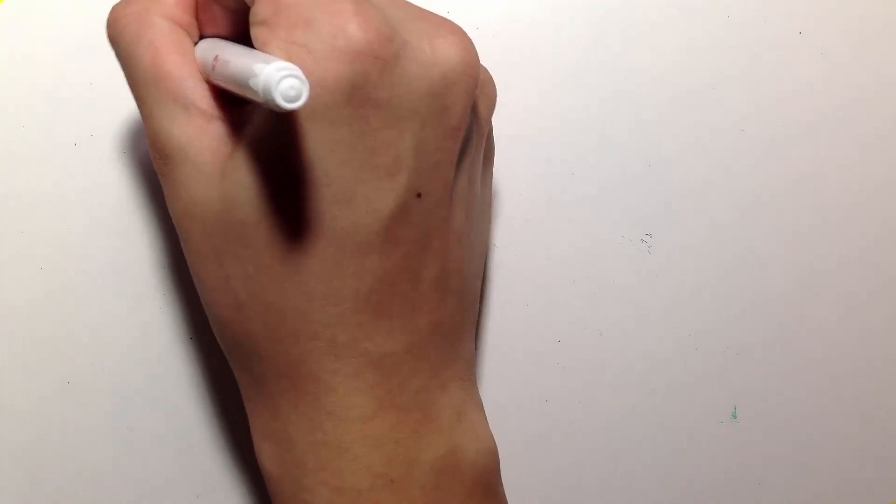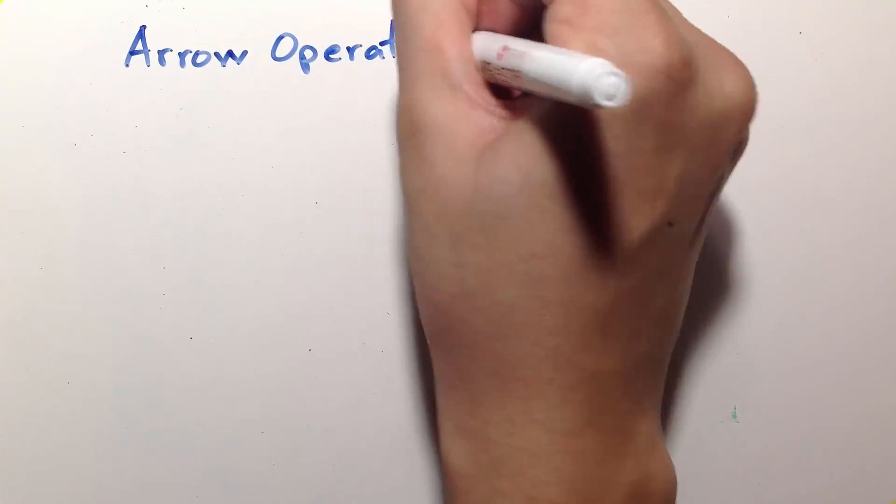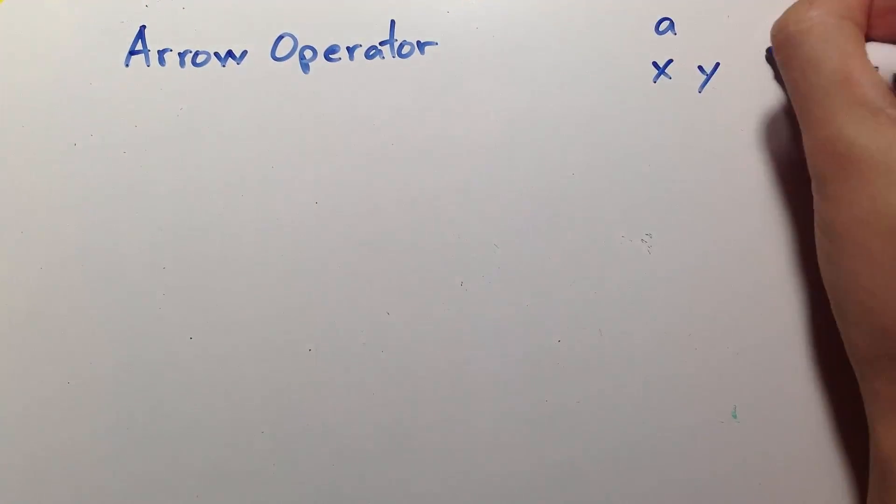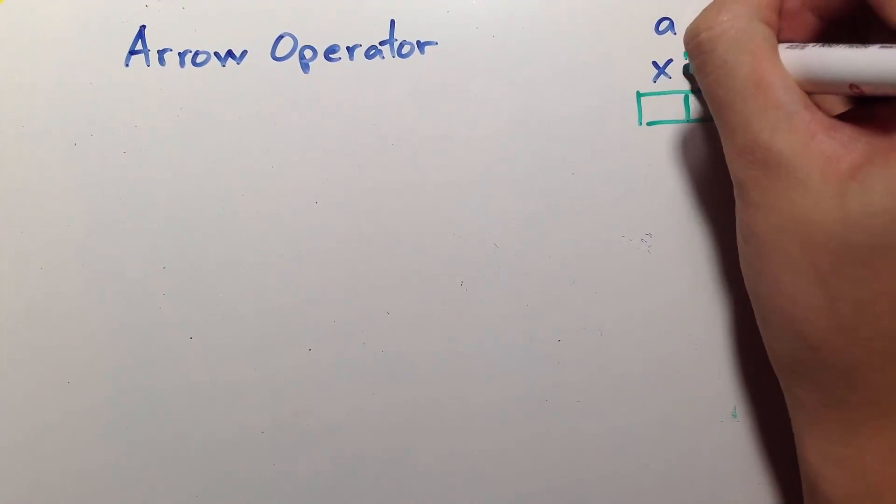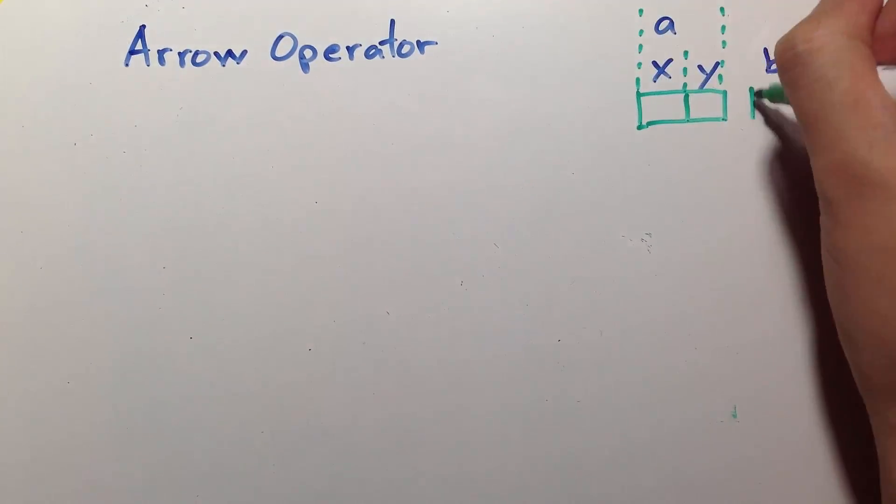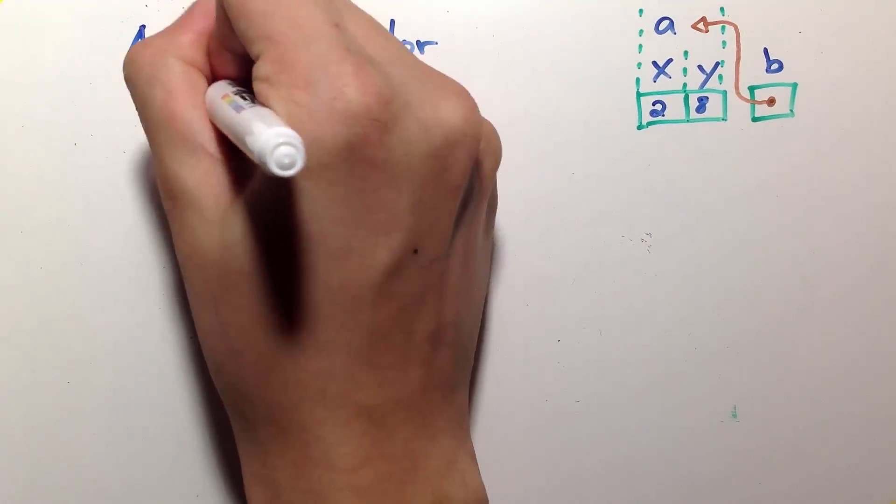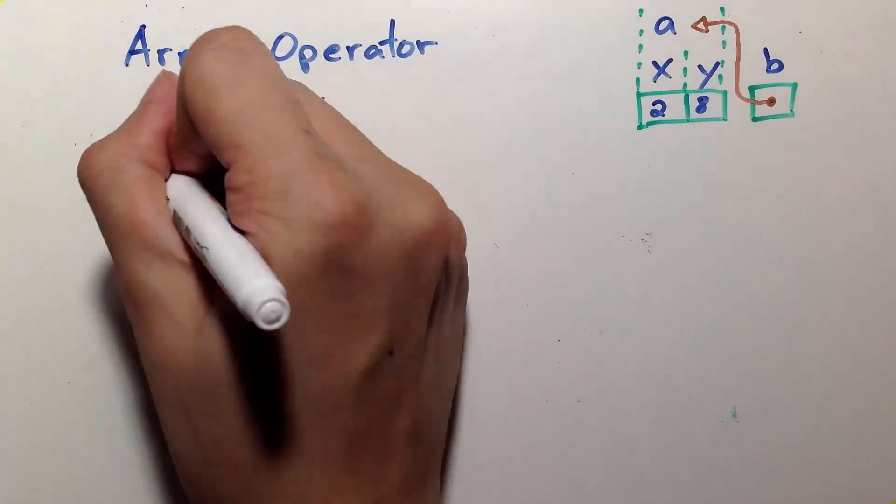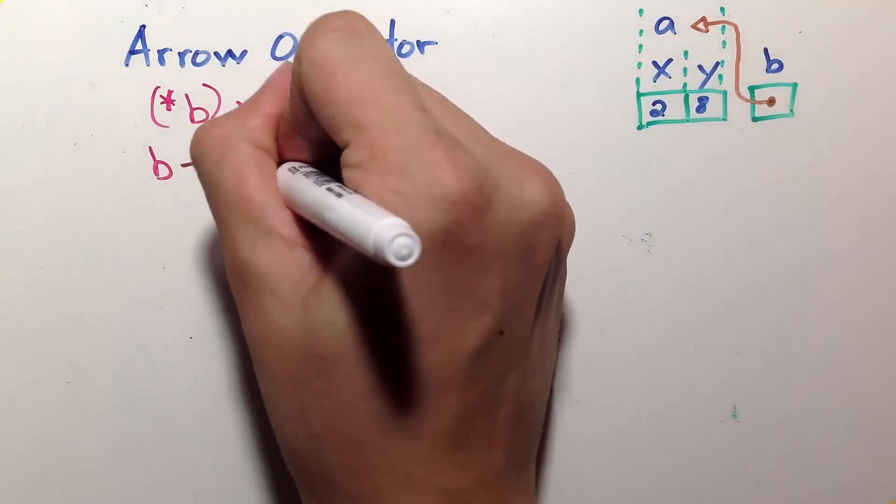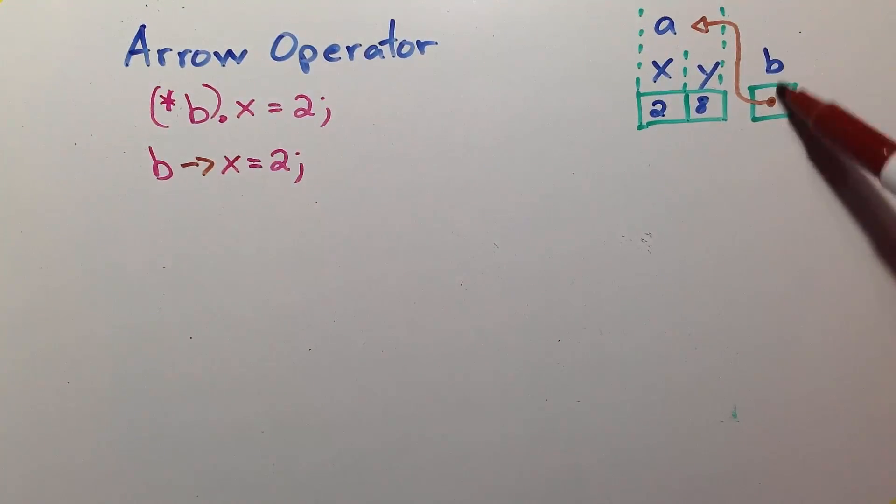Now, they simplified accessing the members of a pointer to a structure using the arrow operators. Now, just give me a second here as I copy the previous memory representations of our structure and a pointer to the structure. There's a 2 and an 8. Now, to simplify this statement, they created the arrow operator such that you can just use it like this. B followed the arrow and it accesses the child x and assign it the value of 2.